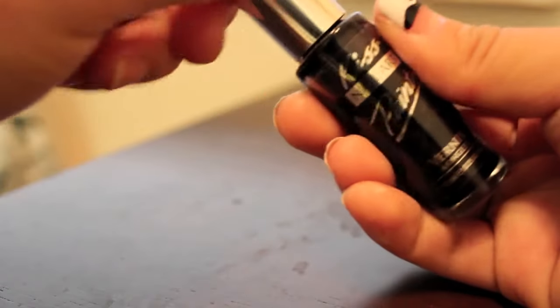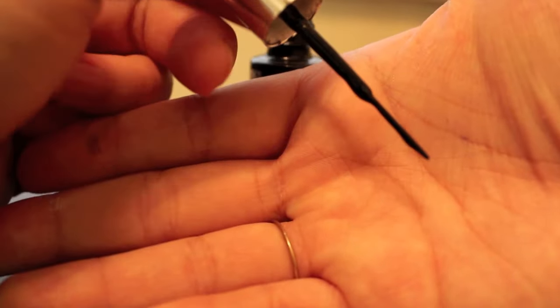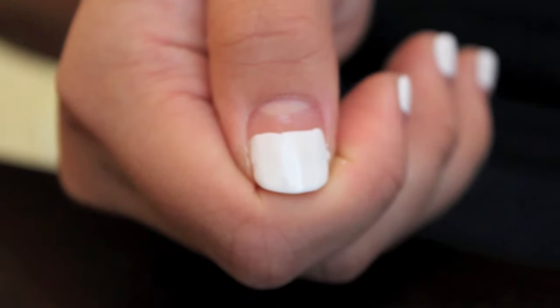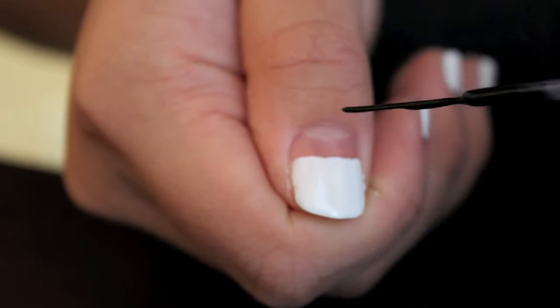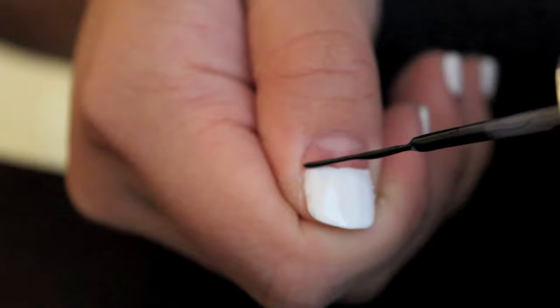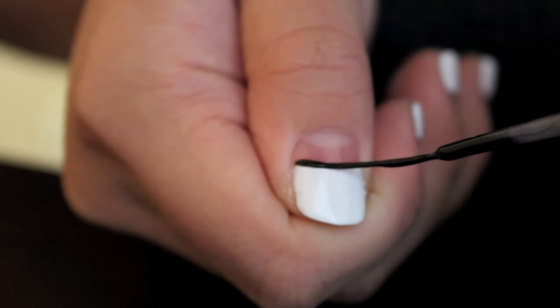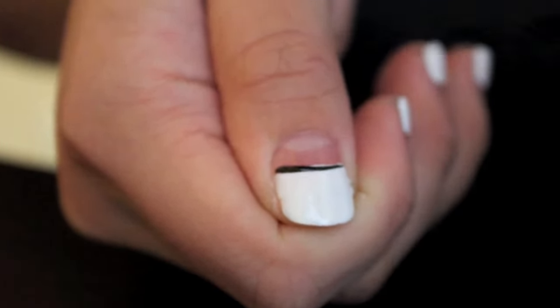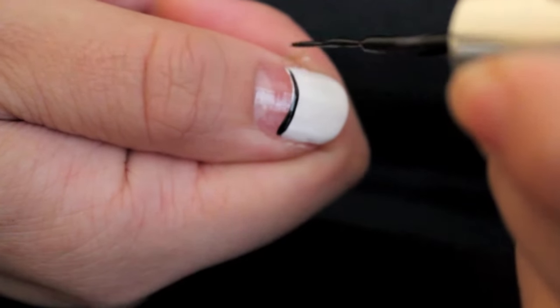Next, I have a black striper that you see right here, and I'm going to slowly paint a black line on top of where my polish starts. Take your time, it doesn't have to be perfect.